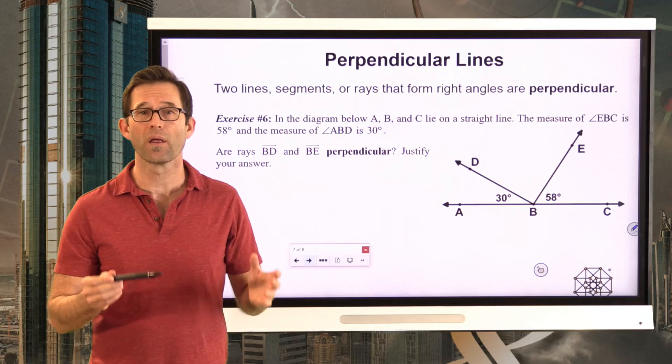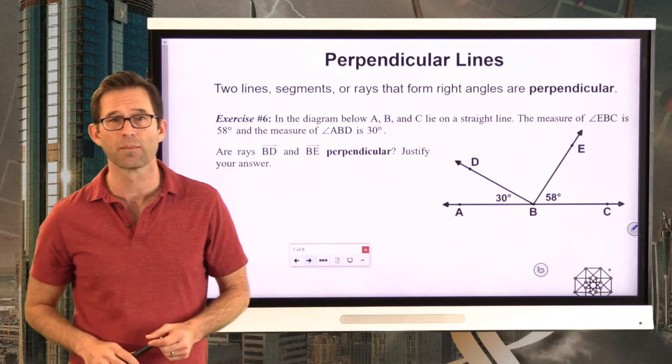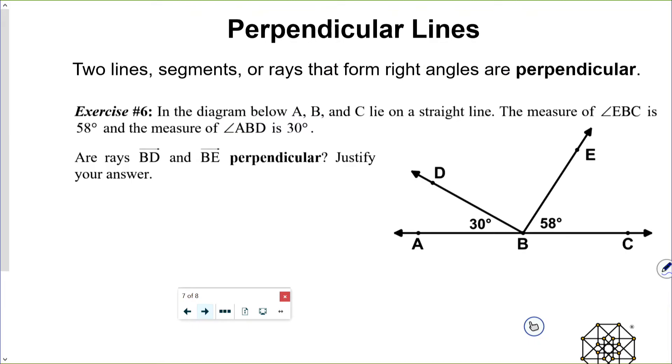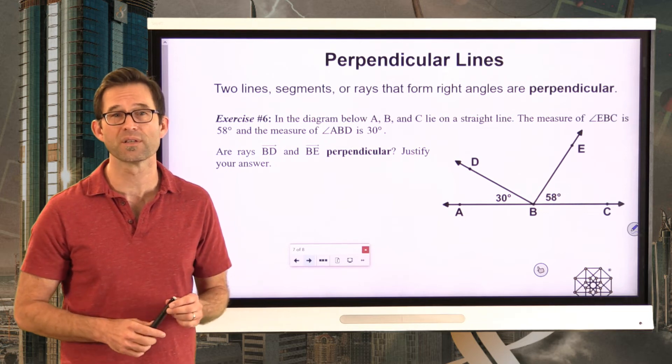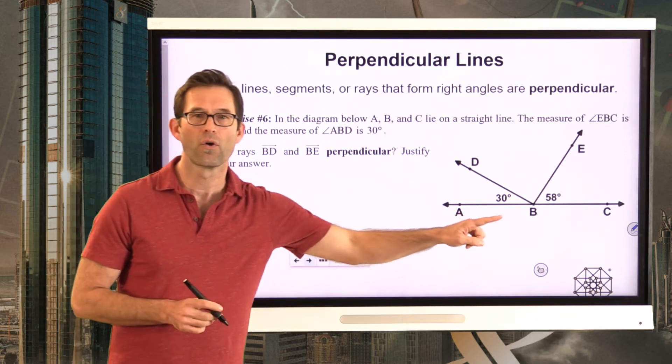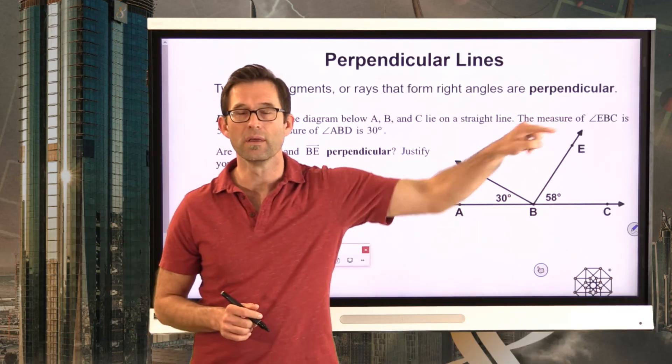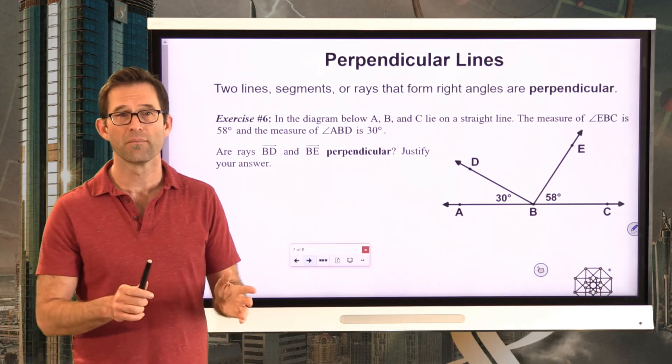Let's use that piece of terminology in our last exercise of the lesson. Exercise number six. In the diagram below, A, B, and C lie on a straight line. And again, that's an important piece of information. The measure of angle EBC is 58 degrees. And the measure of angle ABD is 30 degrees. Are rays BD and BE perpendicular? Justify your answer. As always, I'd like you to play around with this and see whether or not ray BD and ray BE are perpendicular.